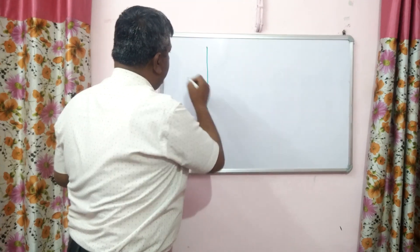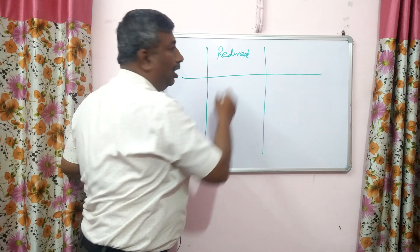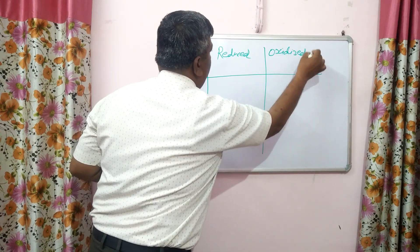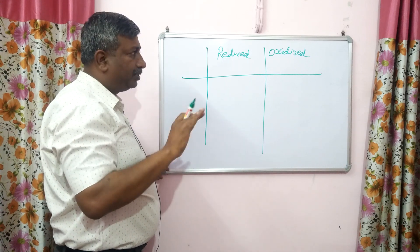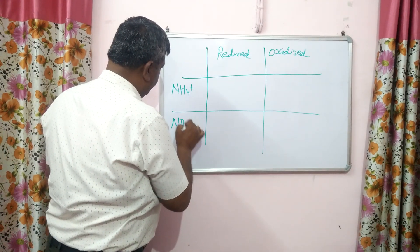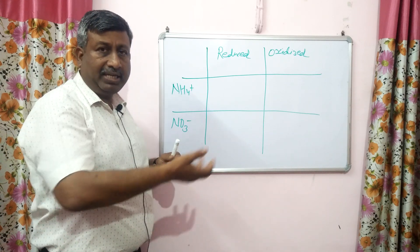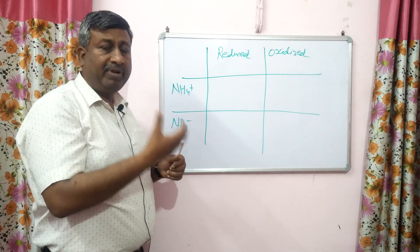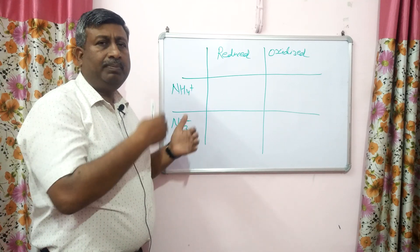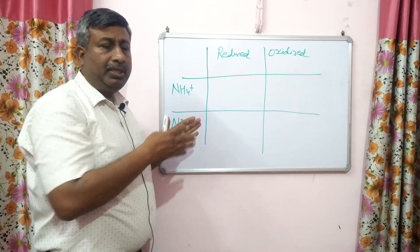We can categorize two conditions: reduced condition means all pores are filled with water with no air; oxidized condition means some or many pores have air. The sources of ammonium and nitrate in soil may be fertilizer application — ammonium-containing or nitrate-containing fertilizer — or mineralization and decomposition. These are different processes responsible for the presence of ammonium and nitrate in soil.